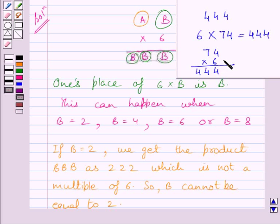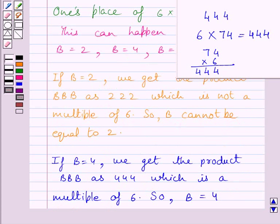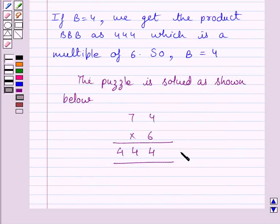Clearly you can see, here we have solved this puzzle. Here, value of B is 4, and value of A is 7. Now we can write, if B is equal to 4, we get the product BBB as 444, which is a multiple of 6. So, value of B is 4. Here we have solved the given puzzle, and required value of A is 7 and value of B is 4.